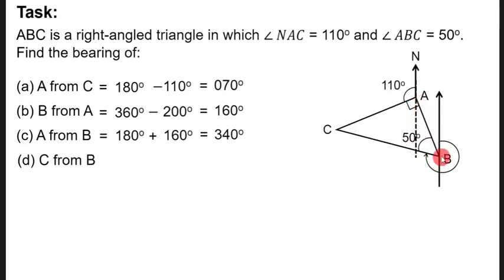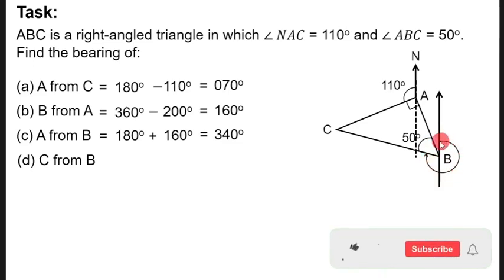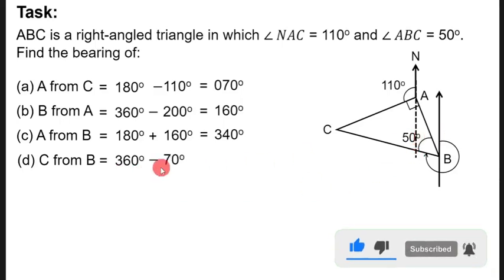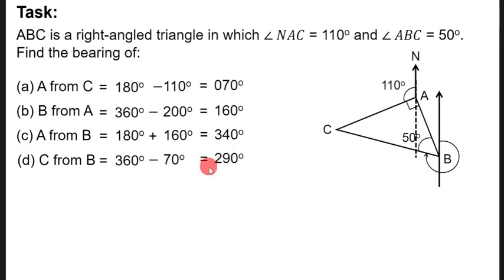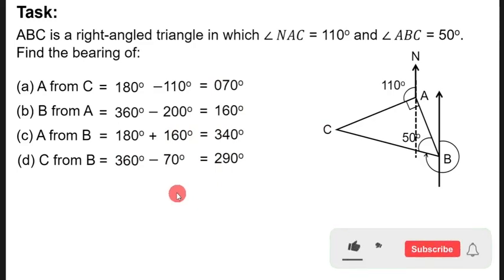Alternate angles, also called Z-angles, are equal. So this angle of 20 degrees corresponds to the alternate angle of 20 degrees on the other side. Adding 50 plus 20 gives 70 degrees. Therefore, the bearing of C from B equals 360 minus 70, which gives us 290 degrees.